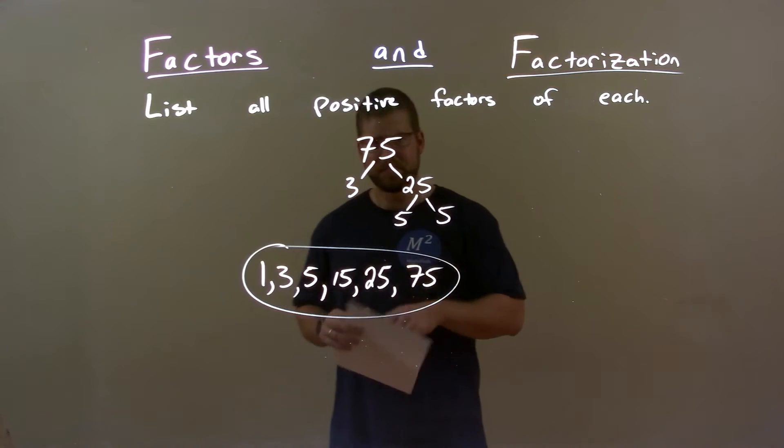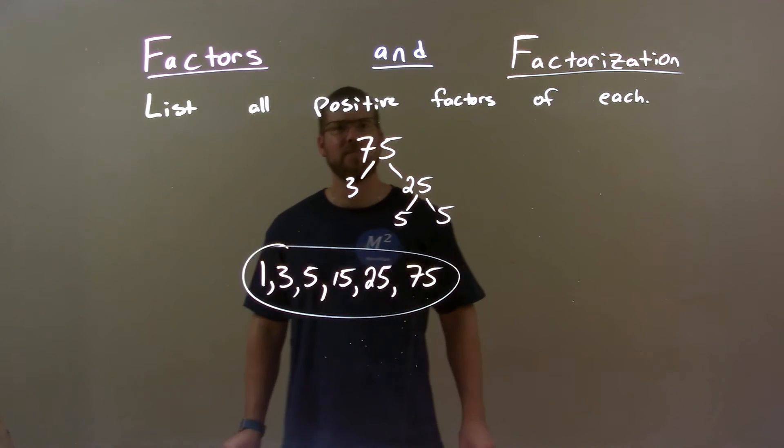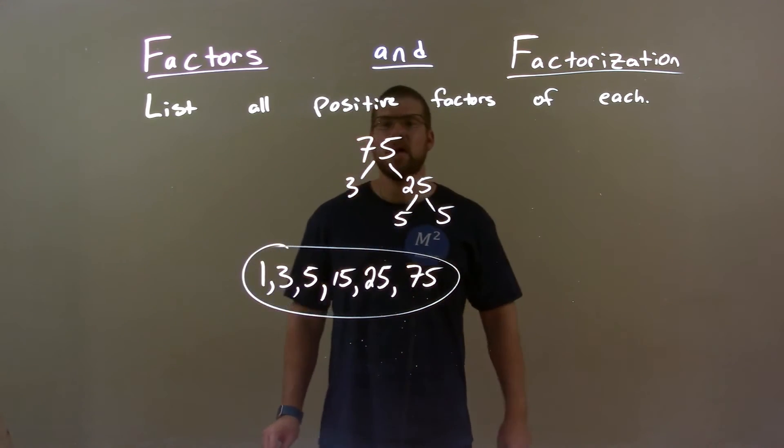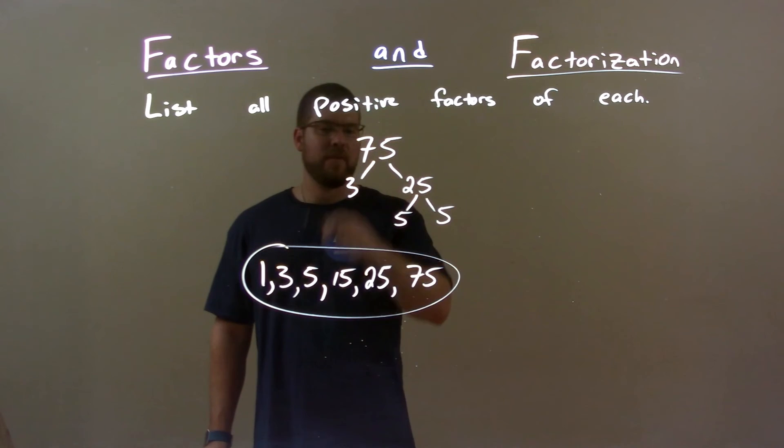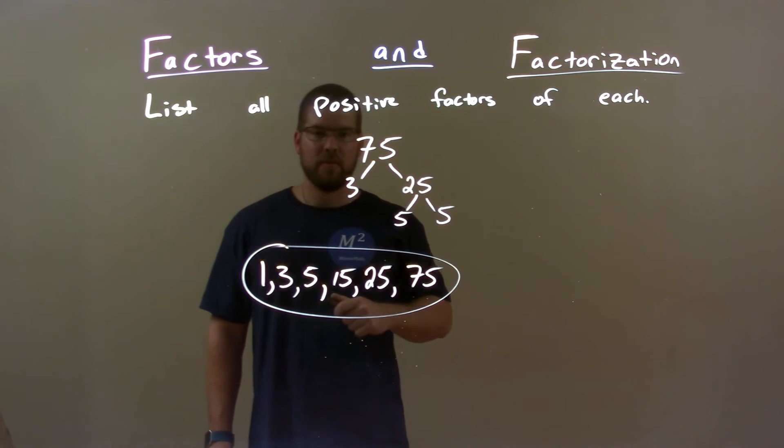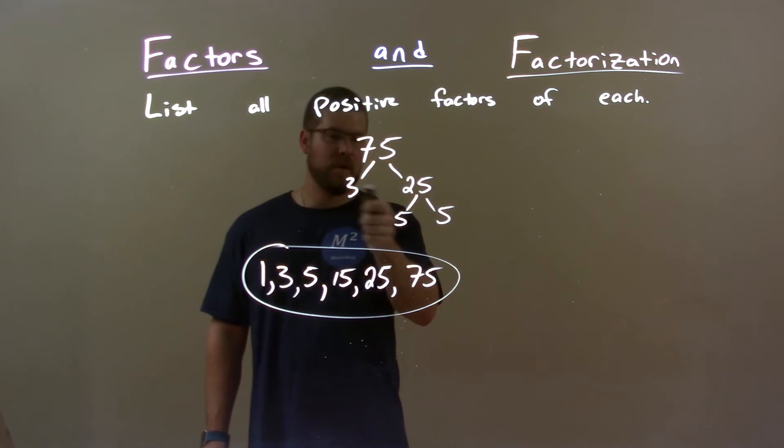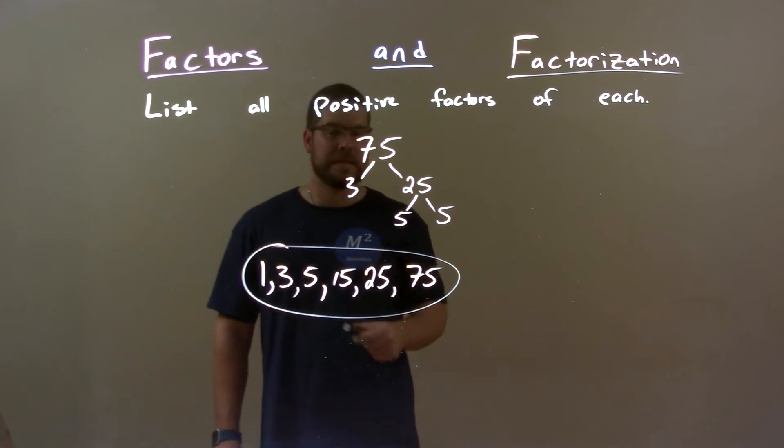So quick recap. We're given the number 75 and we define all the positive factors of it. Breaking this down, prime factorization got 3, 5, and 5. Besides 1 and 75, these are all the numbers that we can multiply with our prime numbers that compiles our list here.